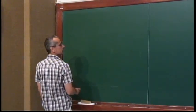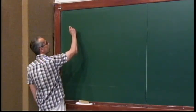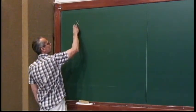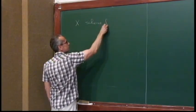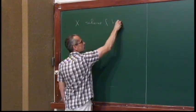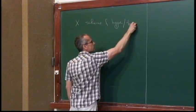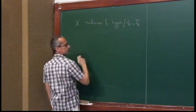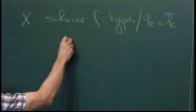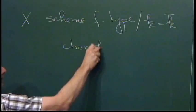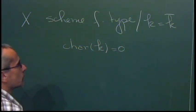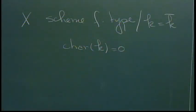In this part, I always assume that X will be a scheme of finite type over some algebraically closed field. It will be important in the first talk that I assume the characteristic of the ground field is zero. One reason is that I want to use resolution of singularities, but in fact some of the results really rely heavily on the characteristic zero assumption because of generic smoothness.